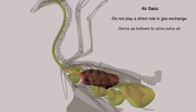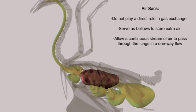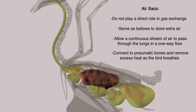They allow a continuous stream of air to pass through the lungs in a one-way flow, thus producing the most efficient respiratory system of any vertebrate. They are also connected to certain pneumatic bones, aiding the bird in shedding excess heat from its body as it breathes, which would be fatal if not removed.